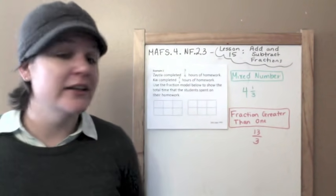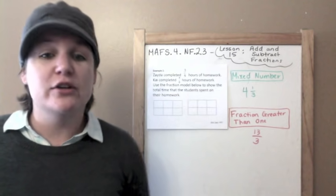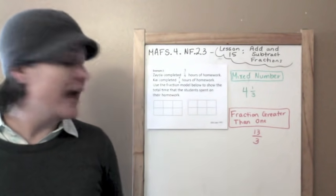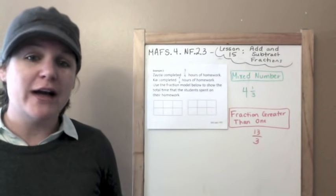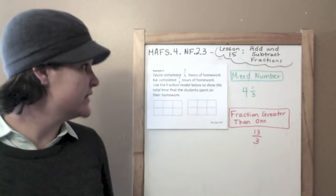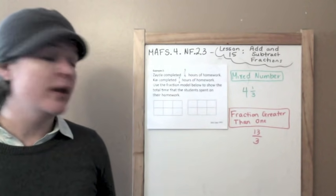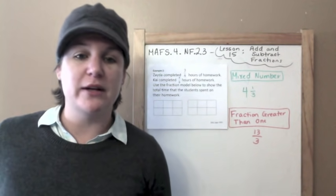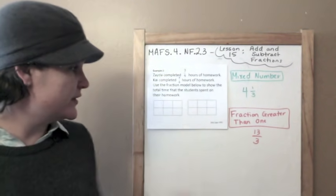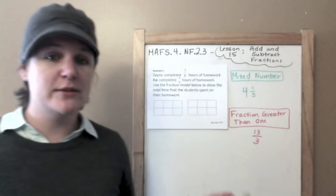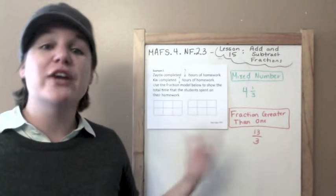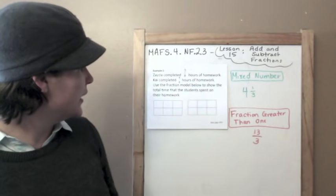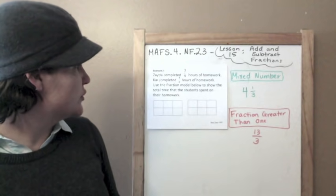Zeta completed 3 sixths hours of homework. Chi completed 4 sixths hours of homework. Use the fraction model to show the total time that the students spent on their homework. So this is a graphic response item display, aka a grid, to show the total time.